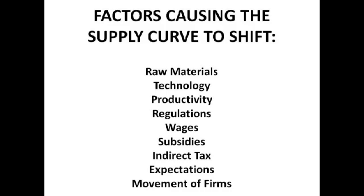Moving on to regulations. If there are a lot of regulations about how firms have to produce a product, it means the costs of production are higher, so it's more expensive for firms to supply, fewer firms supply, supply falls, and that's a left shift of the supply curve.